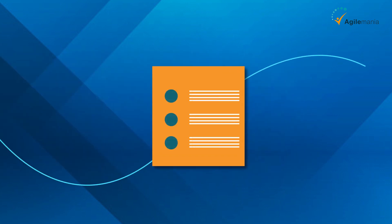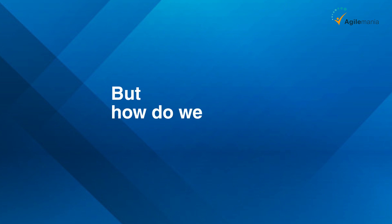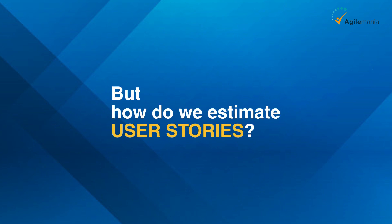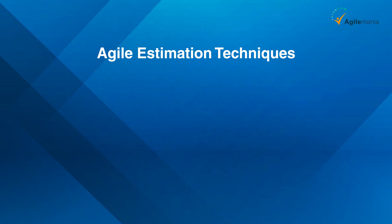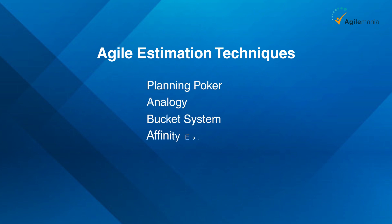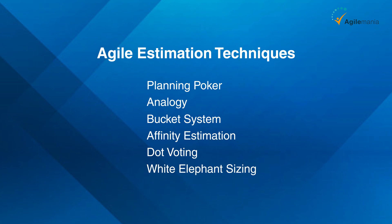Estimating them helps us plan our sprints more accurately and efficiently. But how do we estimate user stories? There are many agile estimation techniques that we can use, such as planning poker, analogy, bucket system, affinity estimation, dot voting, and white elephant sizing. In this video, we are going to focus on one technique that is very easy to use and understand: dot voting.